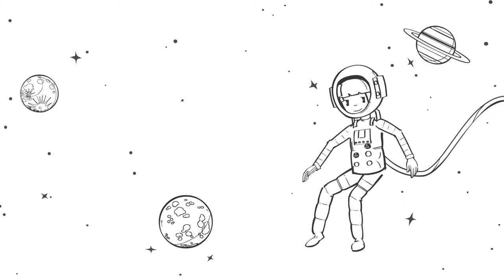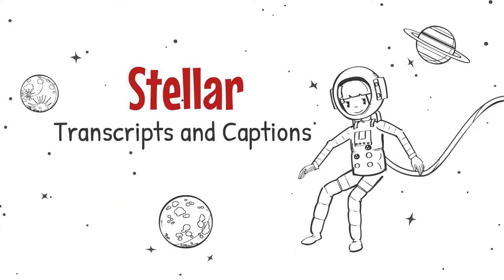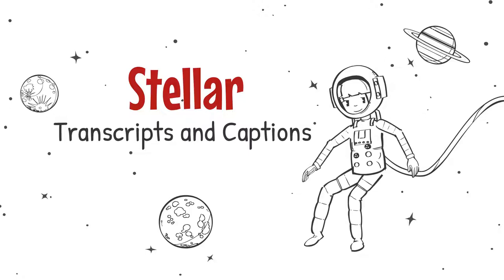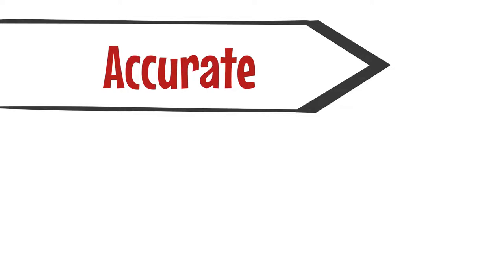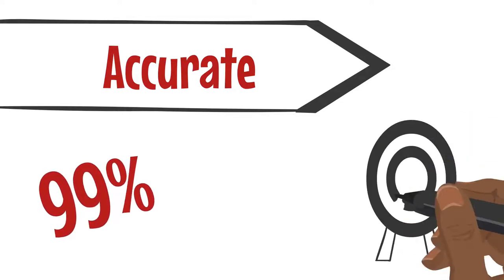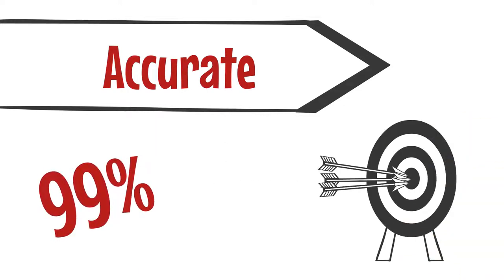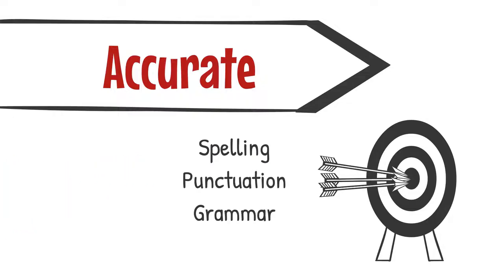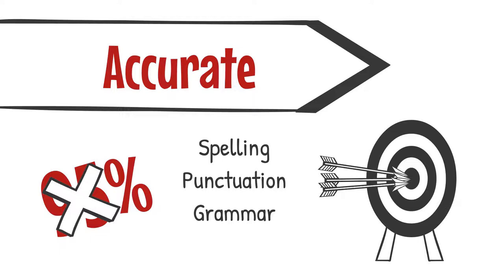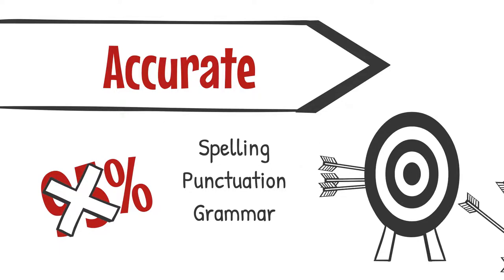Here are the important details of ensuring your captions and transcripts are stellar. To be effective, transcripts and captions need to be accurate — like 99% accurate. This includes spelling, punctuation, and grammar. Though that may sound like a high bar, errors in spelling and punctuation are likely to confuse the people who are most reliant on them, and that's not a good strategy.